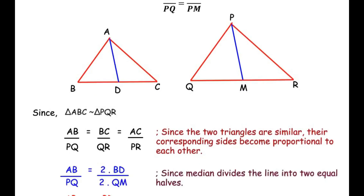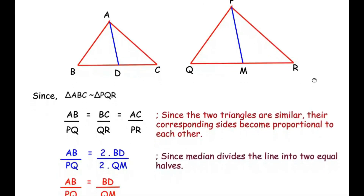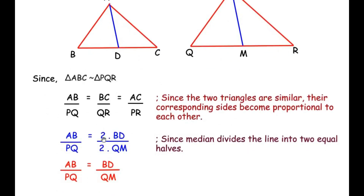We now rewrite the proportion: AB over PQ stays the same, but BC is replaced by 2·BD and QR by 2·QM, since the median divides each side into two equal halves. Cancelling the twos from numerator and denominator, we are left with AB over PQ equals BD over QM.